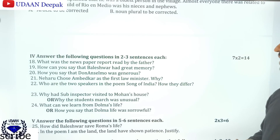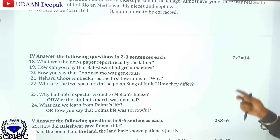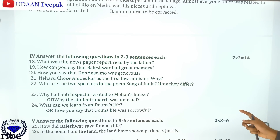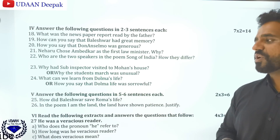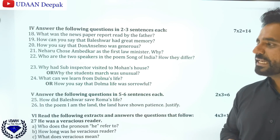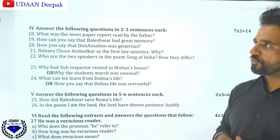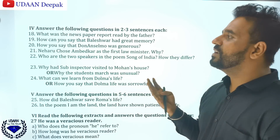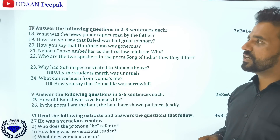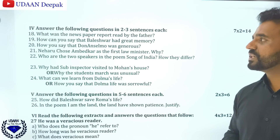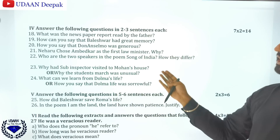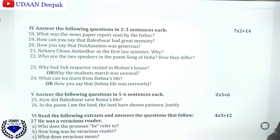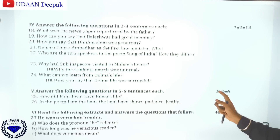Answer the questions in two or three sentences each. Total you will get seven questions and each carries two marks. You can find the questions here from question number 18 to question number 24. For example: 'What was the newspaper report read by the father?' — there are seven such questions, each for two marks.